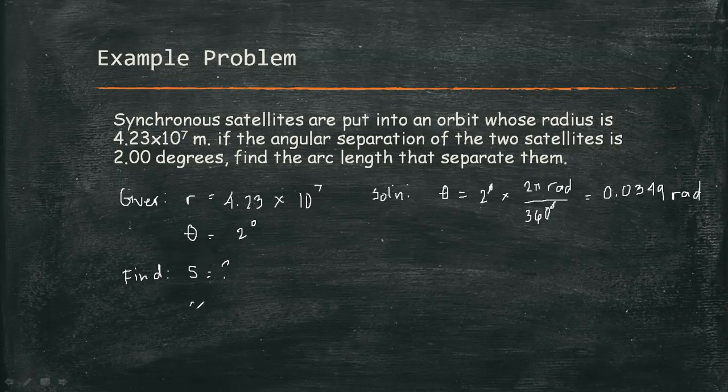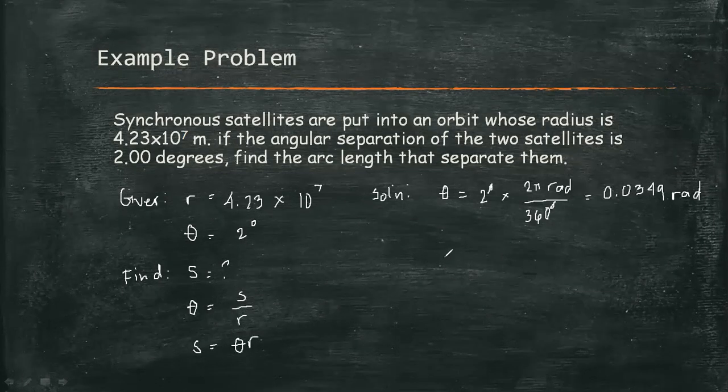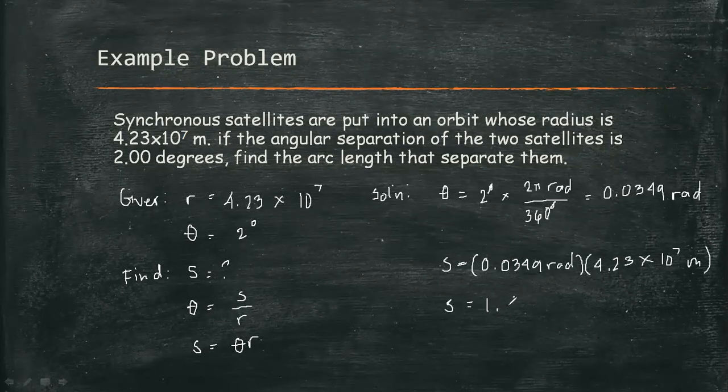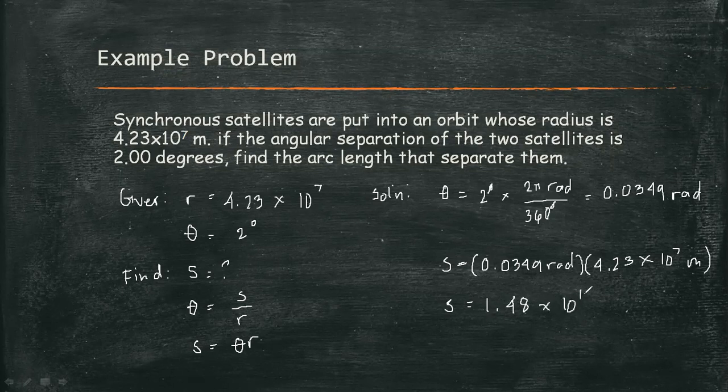So to find the arc length, we know that theta is equal to the ratio of arc length and radius. Therefore, our arc length is equal to theta times the radius. Using this and substituting the value of theta and r, we are going to have 0.0349 radians times 4.23 times 10 to the 7 meters. Therefore, our arc length is 1.48 times 10 to the 6 meters.